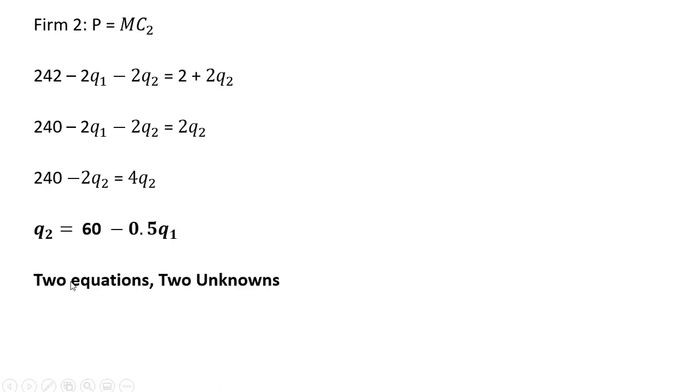So what we have now are two equations and two unknowns. Here's our two equations that we found for firm 1 and for firm 2. We're just going to substitute one into the other. I'm going to take this 60 minus 0.5Q subscript 1 and plug it into Q subscript 2 in this equation.